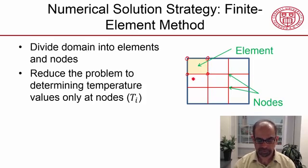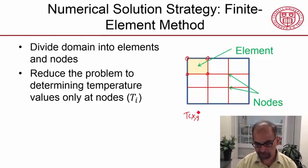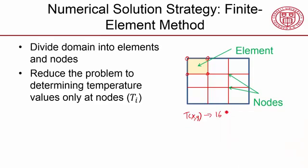For now, let's think of the nodes as just the corners of each element. And then we reduce the problem to determining temperature only at the nodes. Here I have 16 nodes—four rows of four—so I have 16 nodes. So I'm going from determining temperature everywhere, needing to determine a two-dimensional function, to determining 16 temperature values.